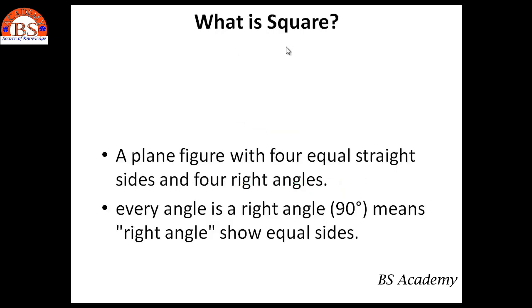And the next comes of square. What is square? A plane figure with four equal straight sides and four right angles. Every angle is a right angle, that is 90 degrees, which means right angle and show equal sides.